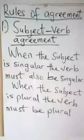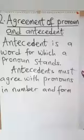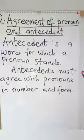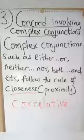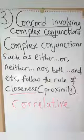Last class, the first rule I gave was subject-verb agreement, and I said agreement of pronoun and antecedent, and also concord involving complex conjunctions. Today I will be giving you another three rules on concord.